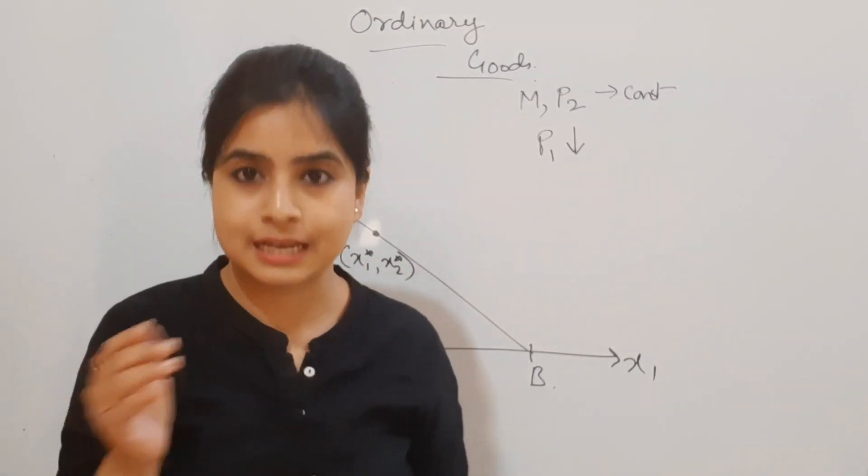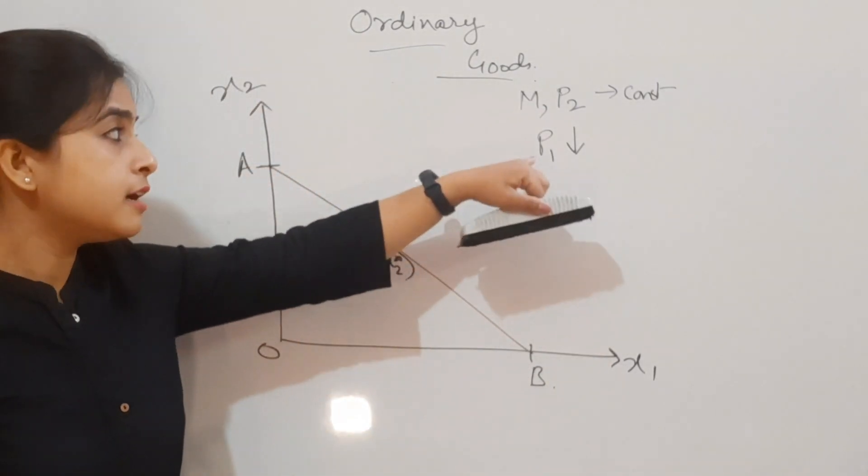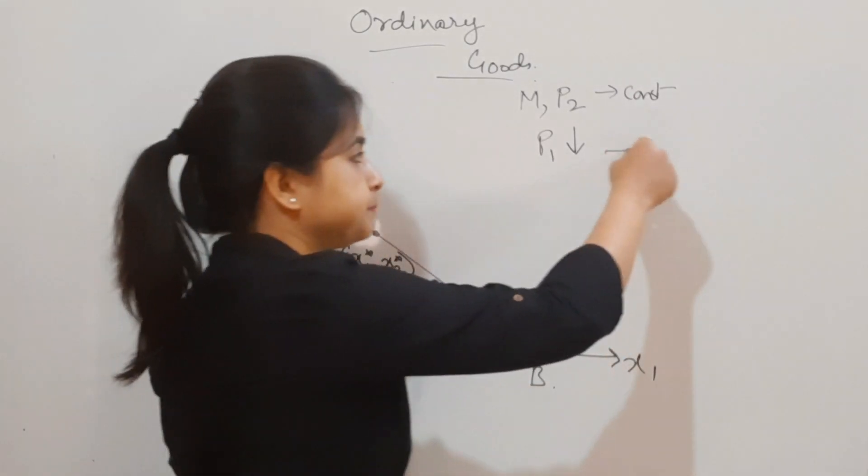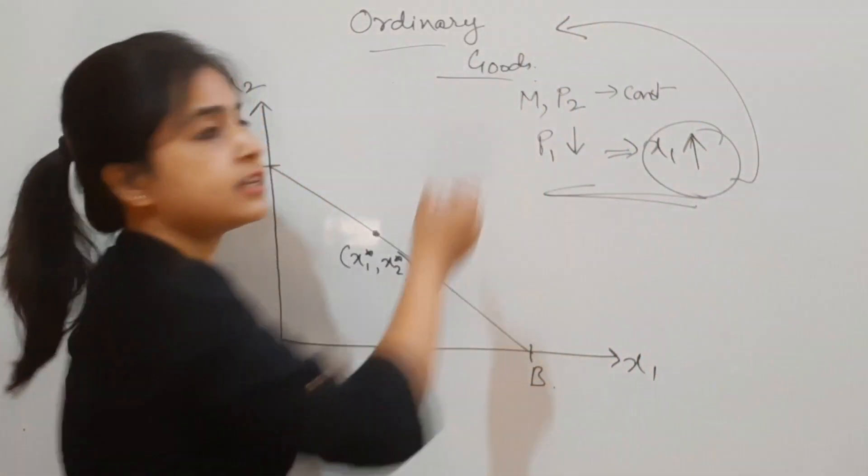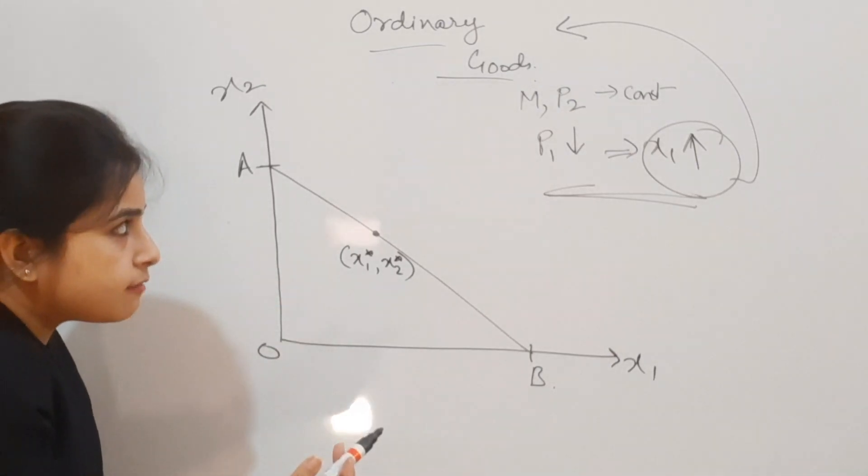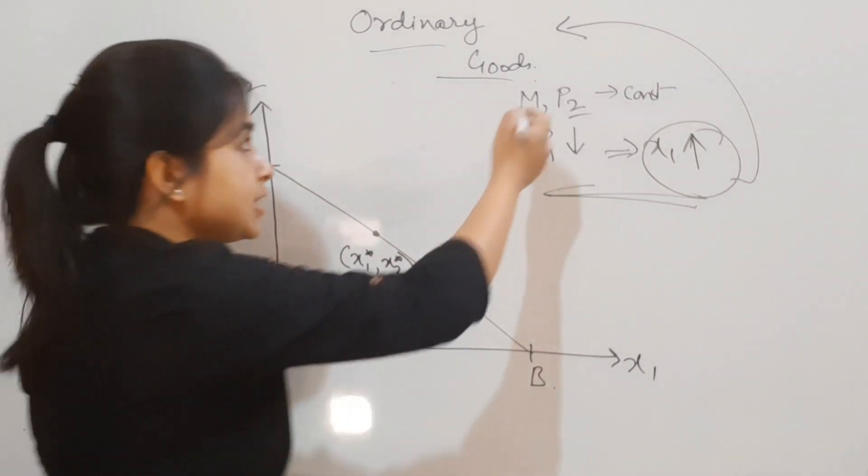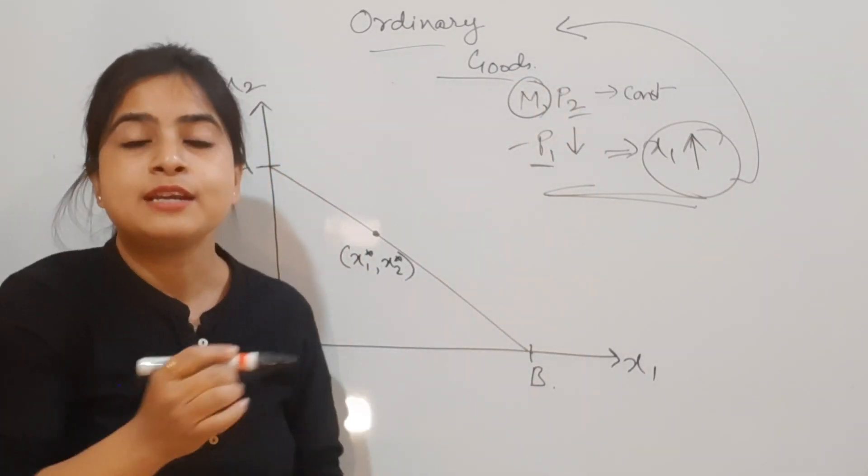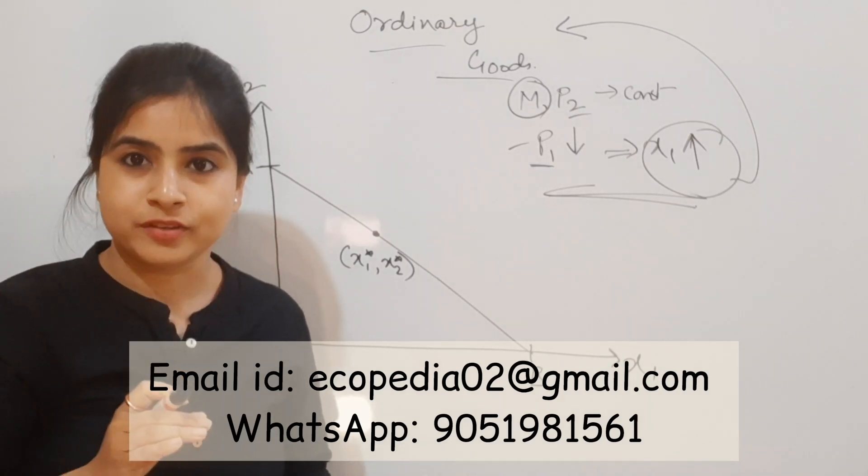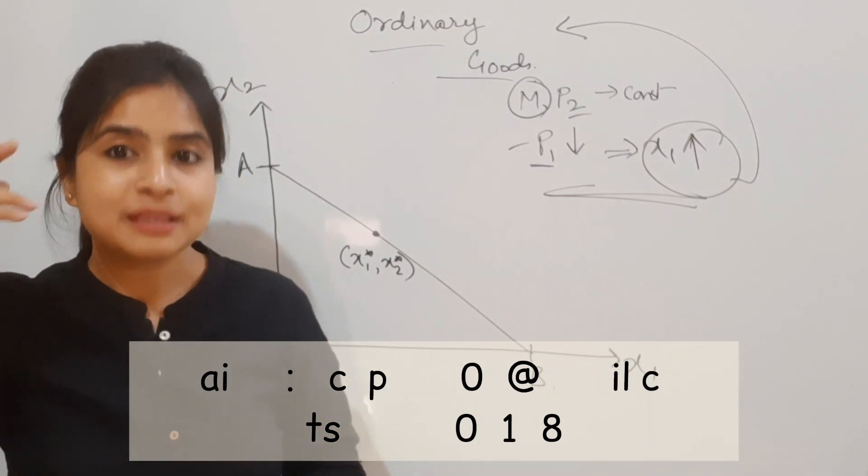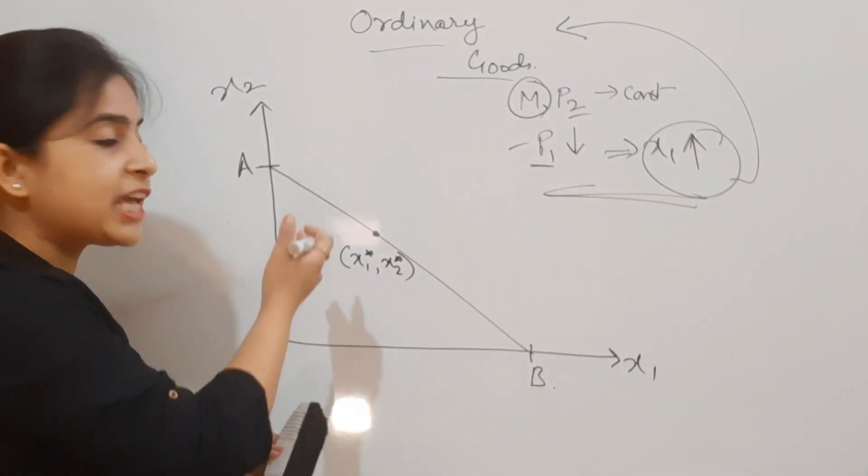Income remains constant and p2 also remains constant, but there is a fall in p1, meaning the price of good x1 reduces. The theory says for normal or ordinary goods, if there's a reduction in price of x1, demand for that good will go up.